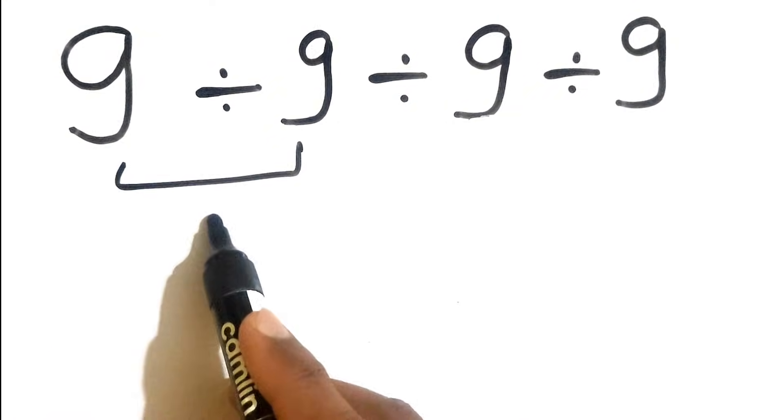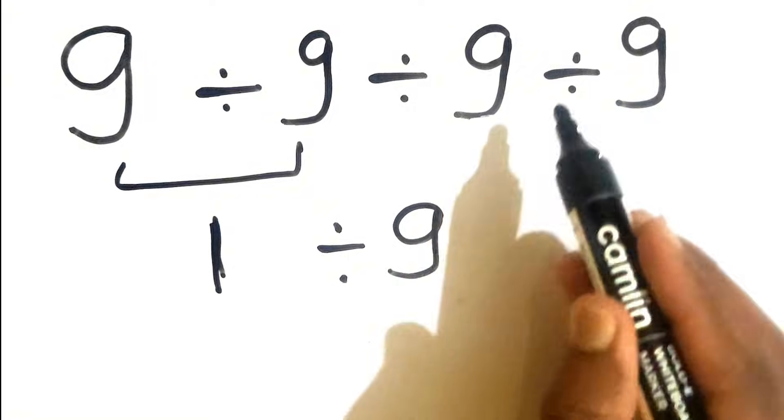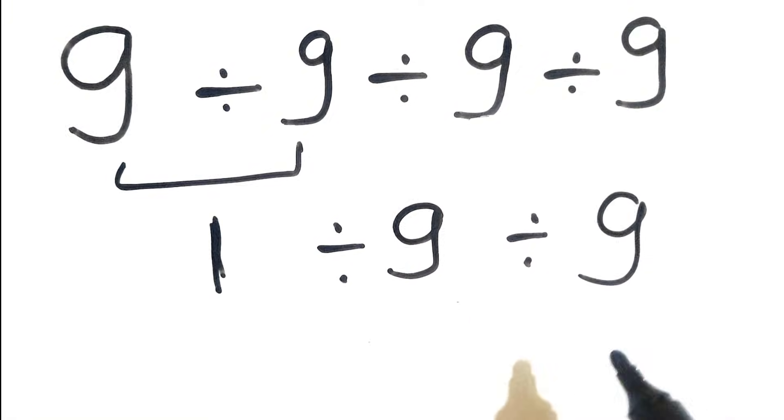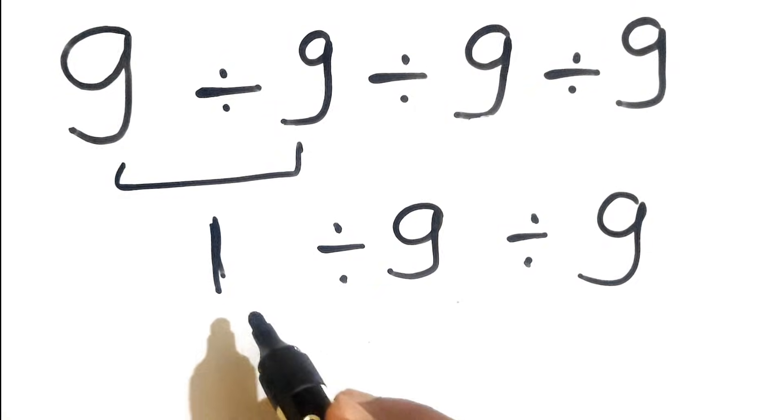Now we rewrite the expression once again, so that is 1 divided by 9 and this divided by 9. Now we have the expression like this. Now here we can write this 1 divided by 9 as...